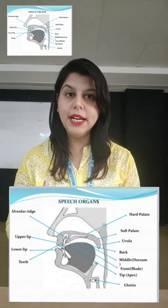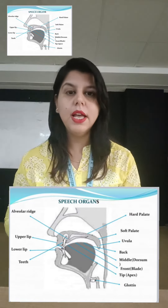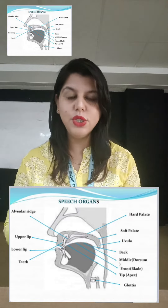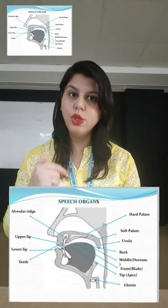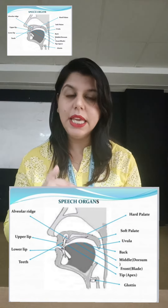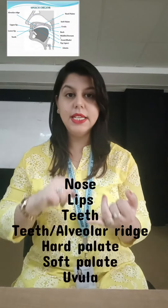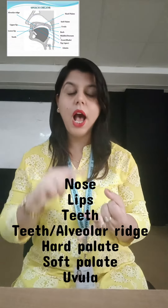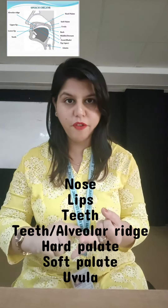You can clearly see a nose, lips, teeth, teeth ridge, hard palate, soft palate, and uvula. These are our organs of speech: nose, lips, teeth, teeth ridge, hard palate, soft palate, and uvula.